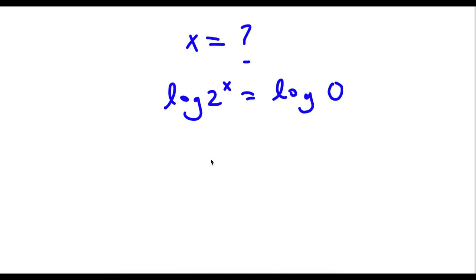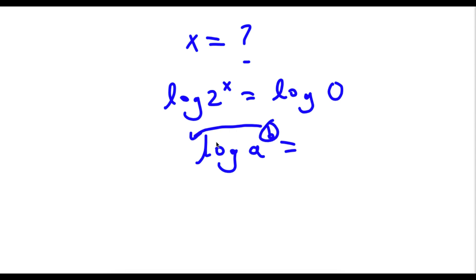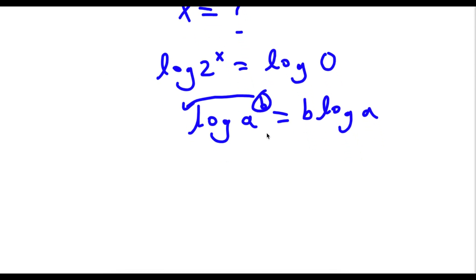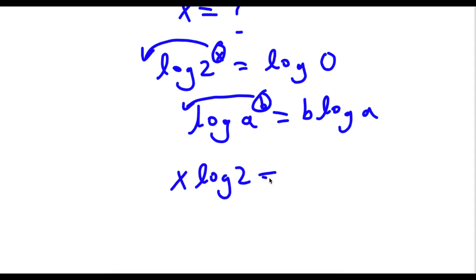Now, if I have something in the form log a to the power of b, I can actually move this exponent b to the front of the logarithm. So this would equal b times log a. So in this case, I have log 2 to the power of x and I can actually move this exponent x to the front. So this would equal x times log 2 is equal to log 0.